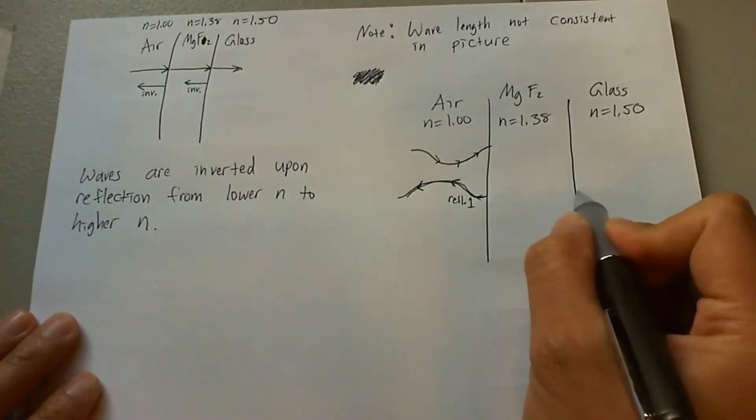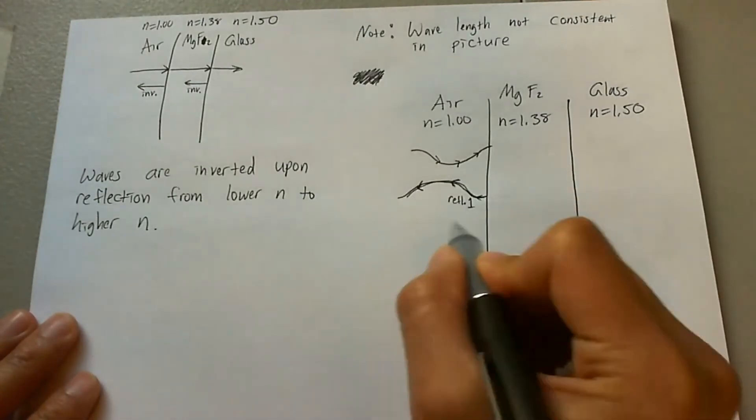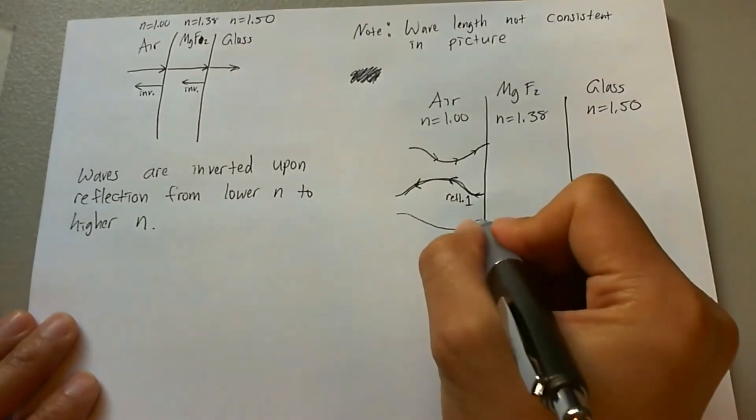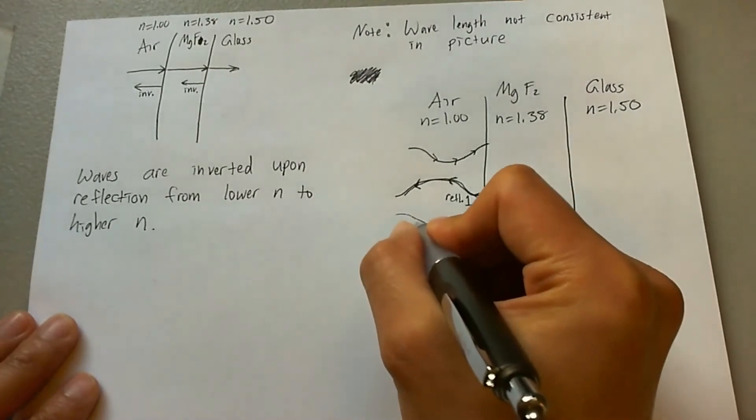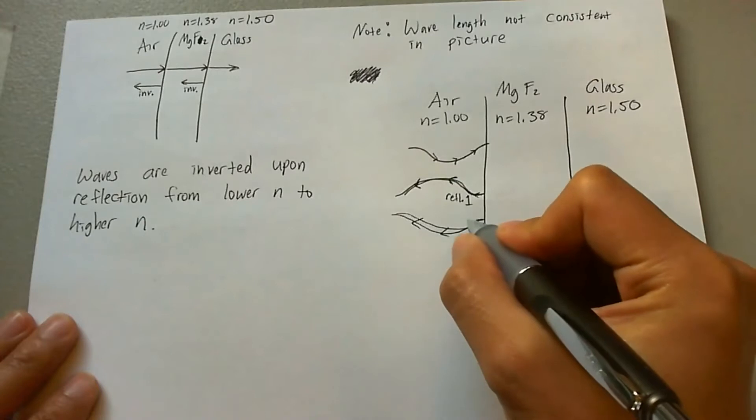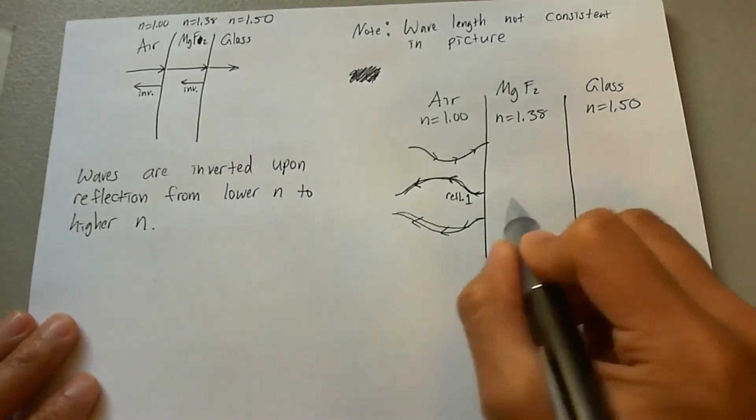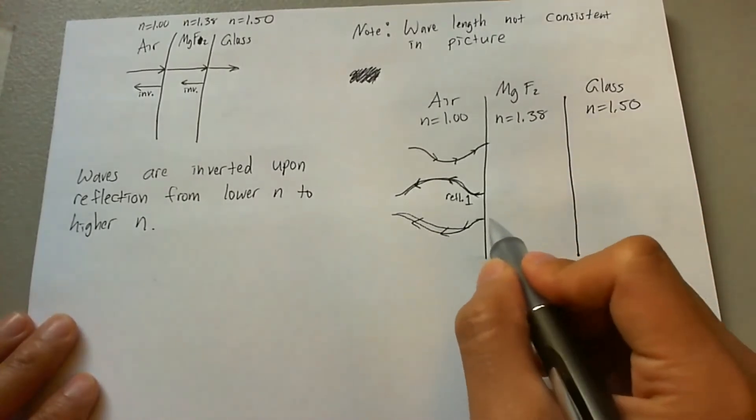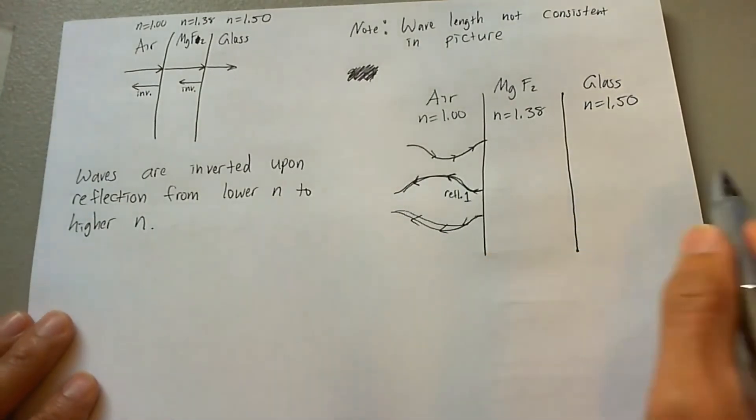So you want a reflected wave that eventually comes out of this coating to look like this. You want it to have this shape. The shape indicates a destructive interference. So that is the reflection that you desire. So you need something that gets reflected and inverted because it gets reflected off of a higher index of refraction such that it comes out of this coating as a negative of the first reflection.